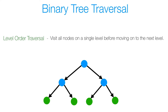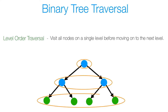We visit all nodes on a single level before moving on to the next level. So we visit all nodes in level 1, then level 2, then level 3, and so on, until we've found the node we're looking for.